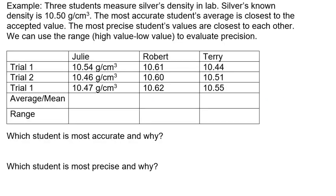Let's look at an example. Three students — Julie, Robert, and Terry — measure silver's density in lab. Silver's known density is 10.50 grams per centimeter cubed.